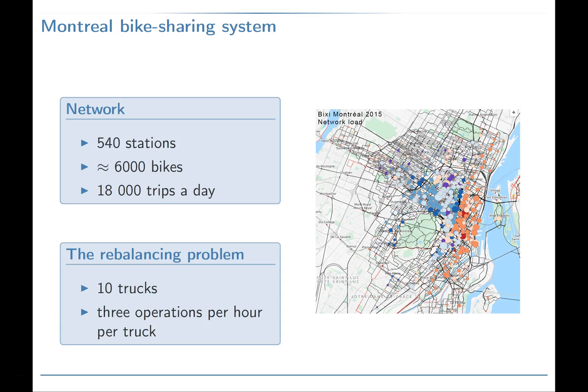The Montreal bike-sharing system has 540 stations located mainly in downtown areas for a total of approximately 6,000 bikes. The daily volume of 18,000 trips is considered high for a metropolitan bike sharing system.